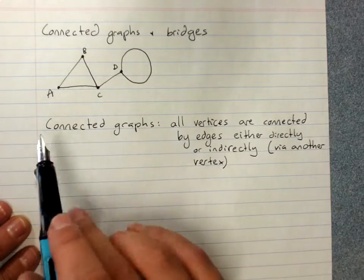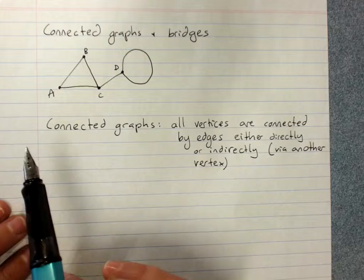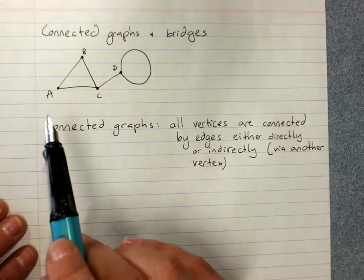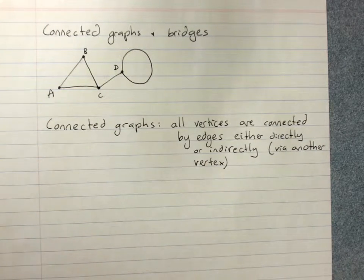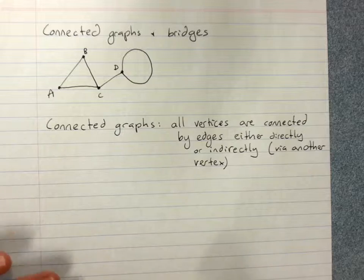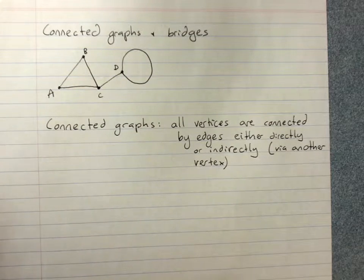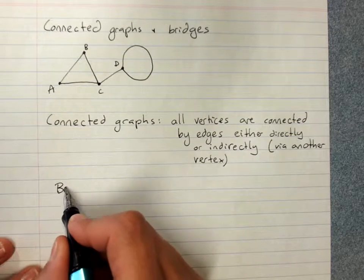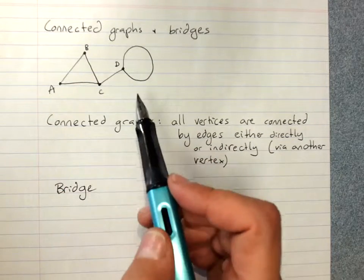So obviously a connected graph doesn't have any isolated vertices. But it also can't be two separate networks. Because a graph can be two completely separate networks. And that's not a connected graph. And the idea of a bridge, so this is a connected graph, I can get from any one vertex to any other.